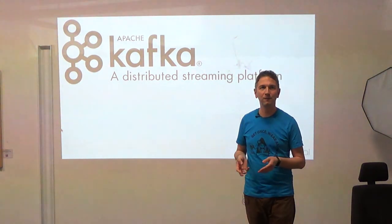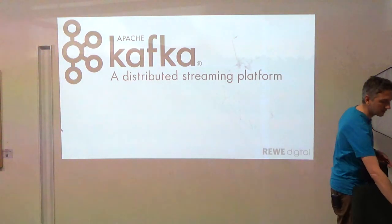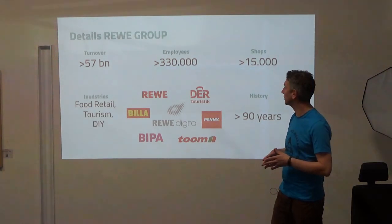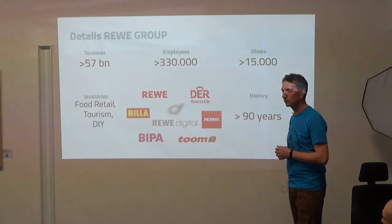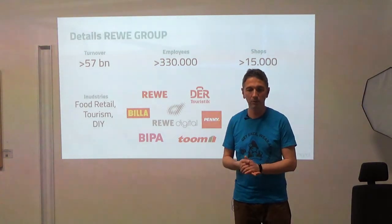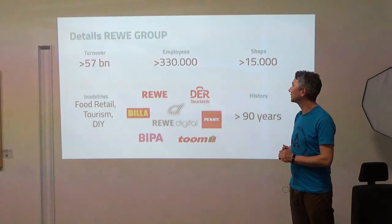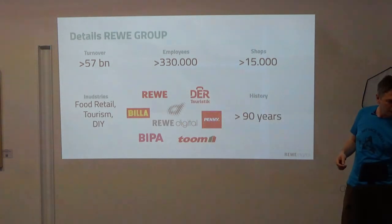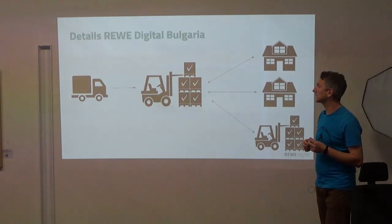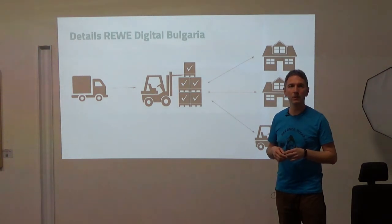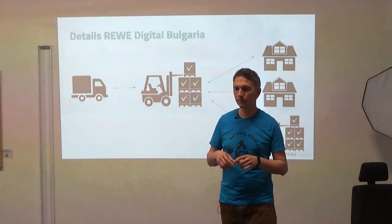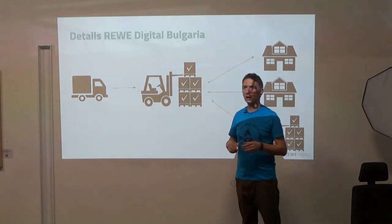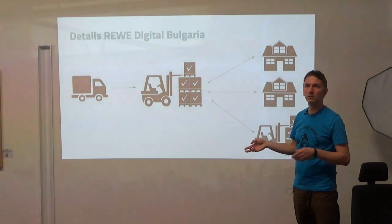Instead I will tell you what kind of software we are trying to build and how exactly we use Kafka. I work in Rewe Group and the main business of Rewe Group is that they have quite a lot of shops selling food — tomatoes, juice and so on. Rewe is well known in Germany, and in Bulgaria you may know their brand Billa. Here in Bulgaria, together with some colleagues in Cologne, we are trying to build the so-called FFP, which stands for Food Fulfillment Platform.